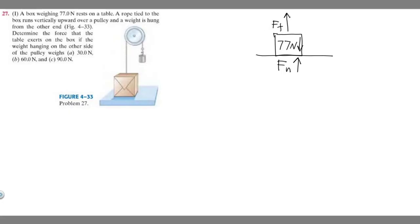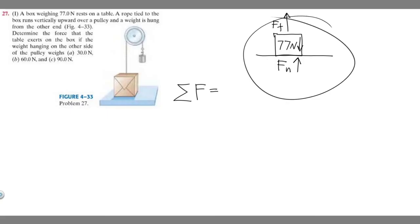So this is our free body diagram. To solve, we use the sum of forces. You add up all your forces and solve for the unknown. They're asking for the force the table exerts on the box — that's the normal force F sub n — so we need to find F sub n by summing all forces.